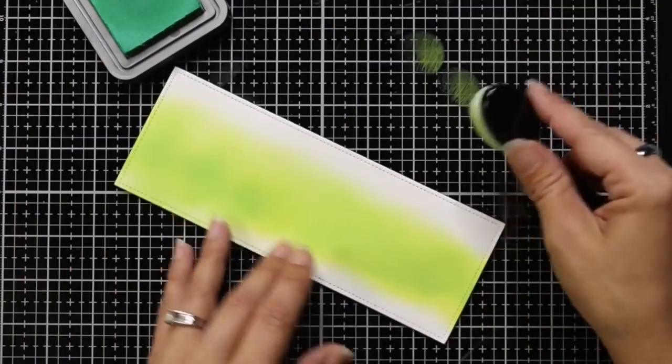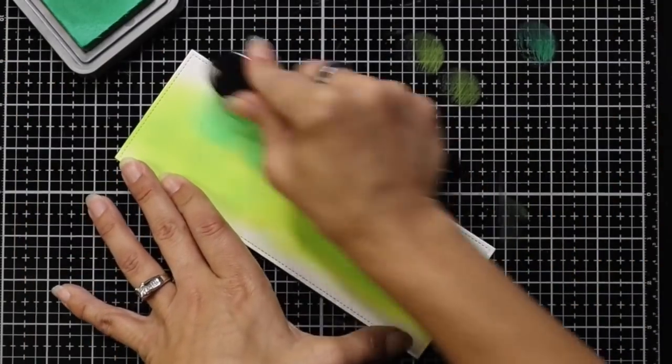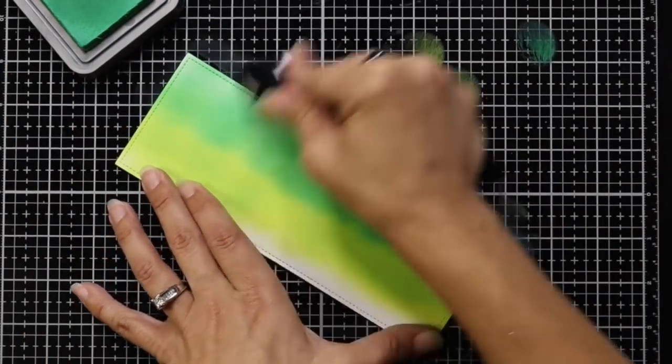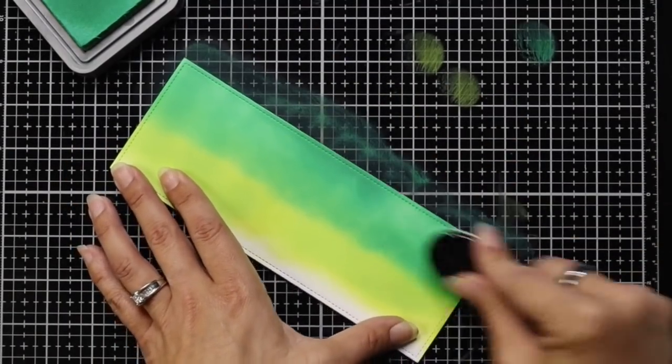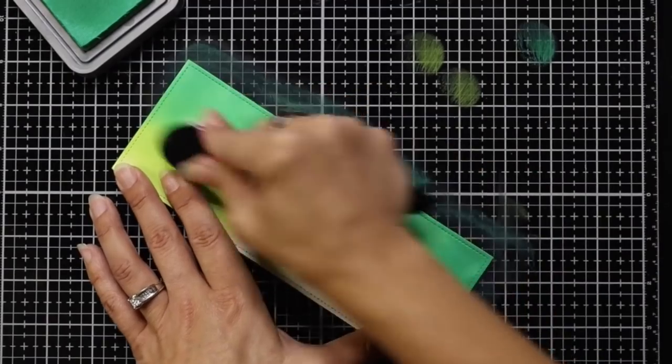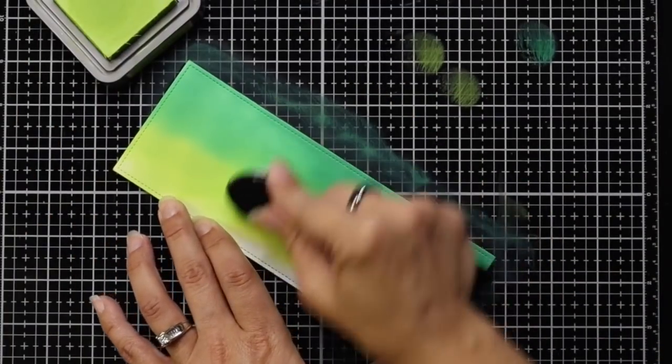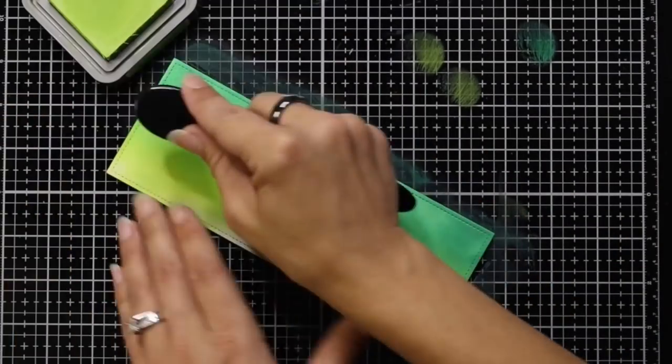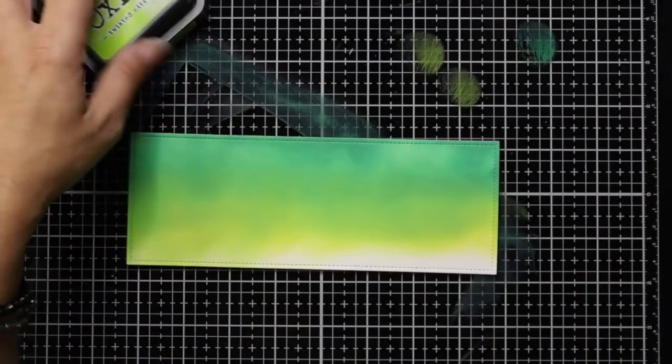Then coming in with the Lucky Clover, just adding that little bit of color there. I will go all the way to the top because sometimes I find it's a lot easier to blend when I have layers of the Distress Ink or Distress Oxide inks on top of each other. And this doesn't have to be a perfectly smooth blend because we are going to bring in the cloudy stencil.